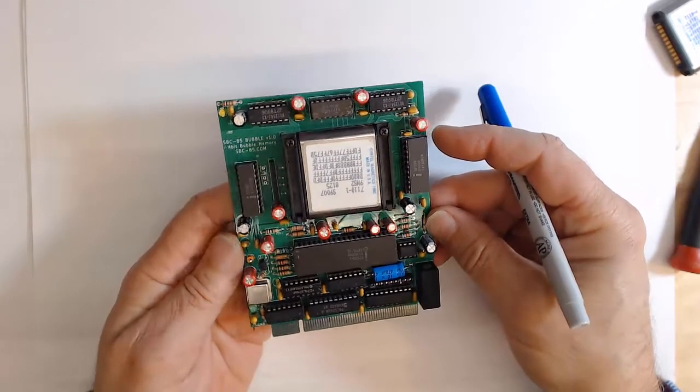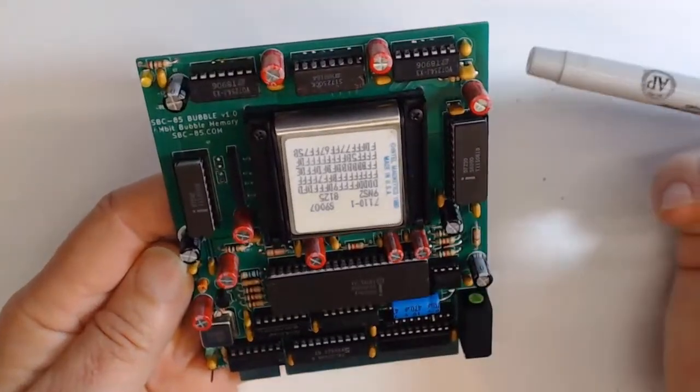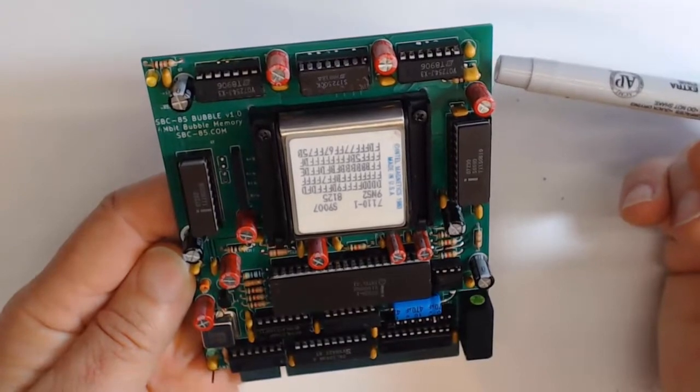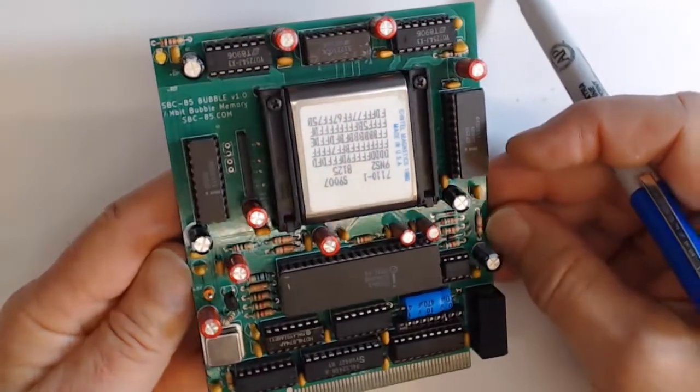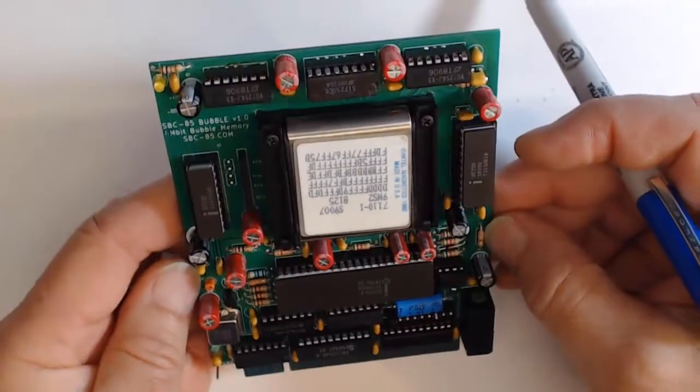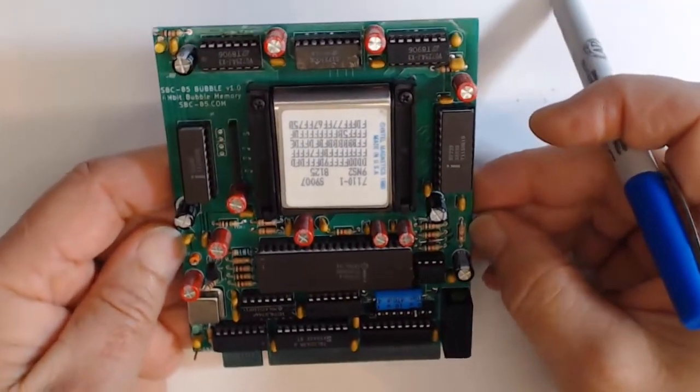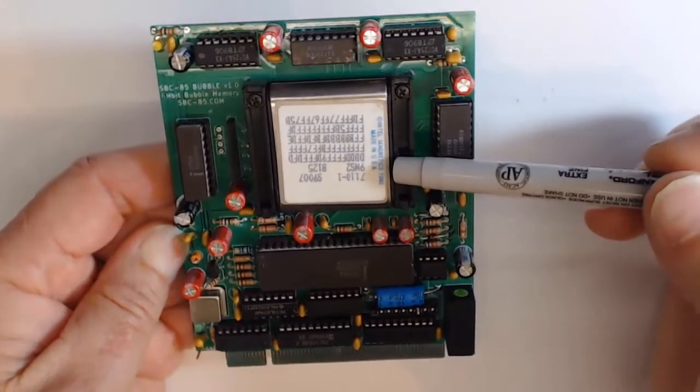Hello world, this is Craig. What I have here is my latest card for the SBC85, and this is a one-megabit bubble memory card. I know I'm always saying that the most recent card I've made is the most fantastic thing I've ever seen, but in this case I think that really applies.